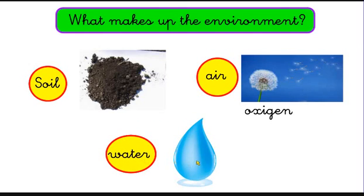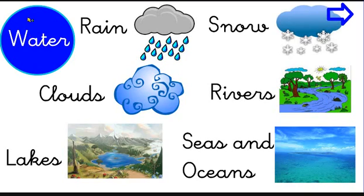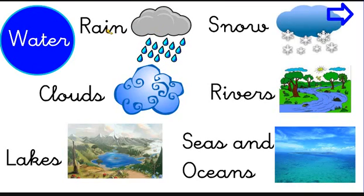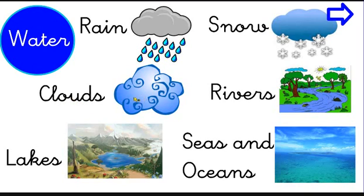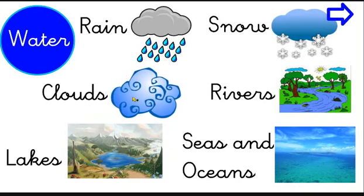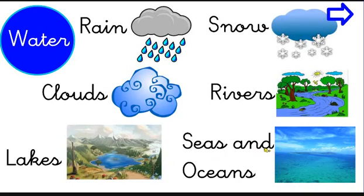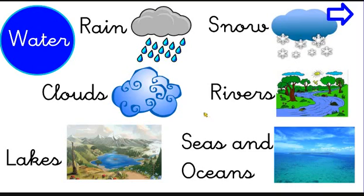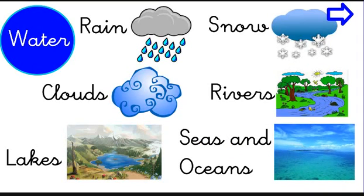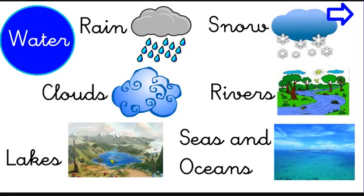Let's have a look now at the water. Water can be found as rain or as snow. We can also see water in the clouds, because the clouds are made of water. Water can also be found in the rivers, in the lakes, and in the seas and oceans. The planet Earth is full of water — it has lots and lots of water, and most of the water is salt water. The fresh water we find in rivers and lakes is very little; most of the water on Earth is salty, from the seas and the oceans.